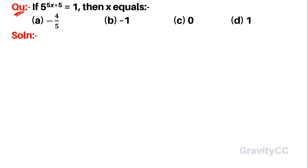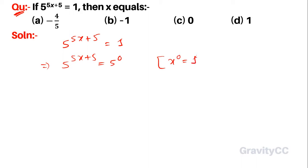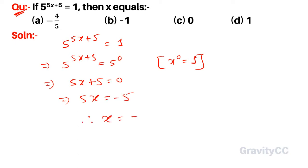Question: if 5 to the power (5x + 5) is equal to 1, then x equals? Given that 5 to the power (5x + 5) is equal to 1, and since x to the power 0 is equal to 1, we can write this as 5 to the power 0. Since the bases are equal, 5x + 5 = 0, so 5x = -5, therefore x = -5/5 = -1. Option B is the correct answer.